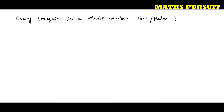In order to answer this question, you could see two things are in place: one is integer and the other one is whole number. So there is a comparison between integer and whole number. Let us refresh our mind — what do we mean by integer and what do we mean by whole number?